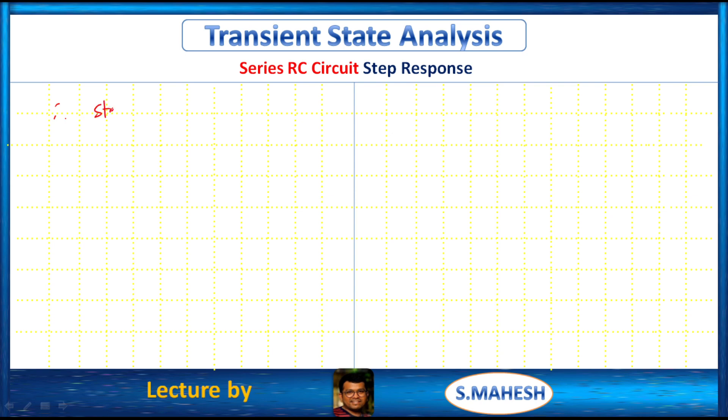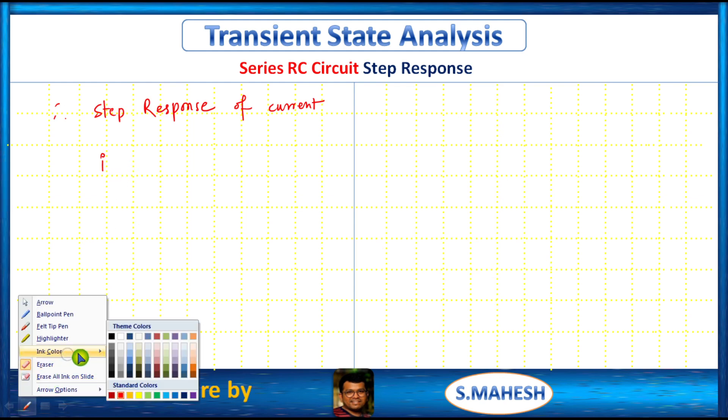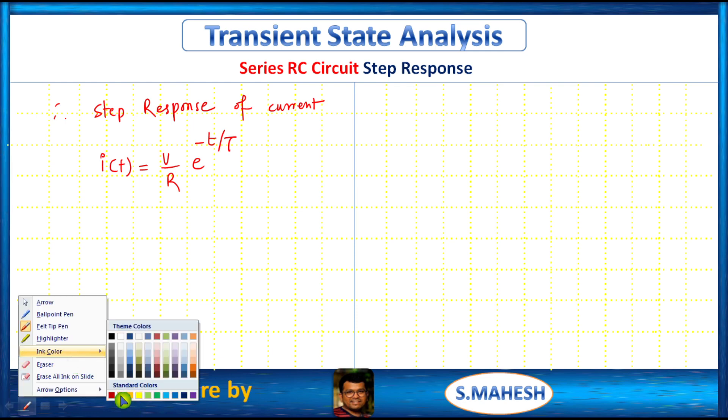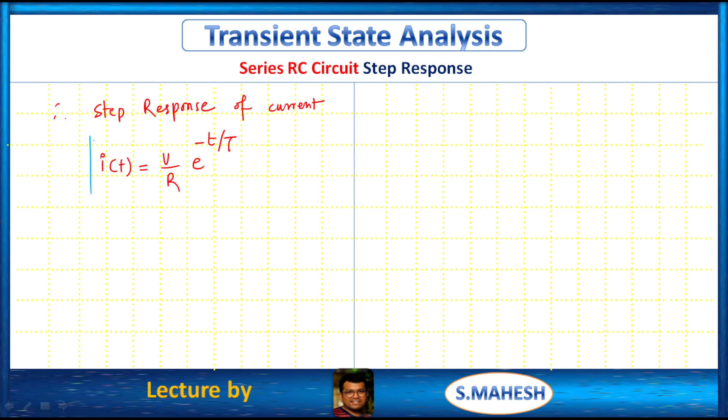Therefore I of t which is equals to V by R e power minus T by Tau. That is we all know that the step response in S domain should be equals to forced response in T domain.